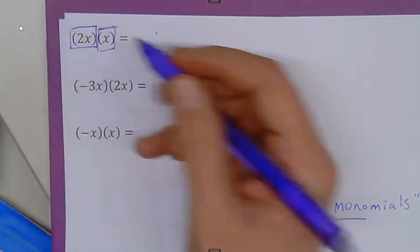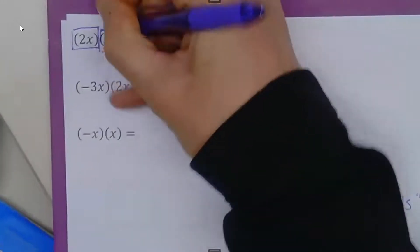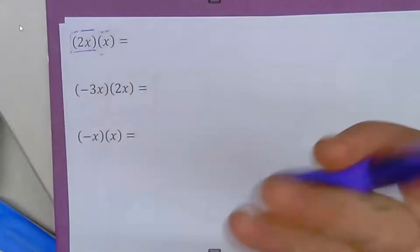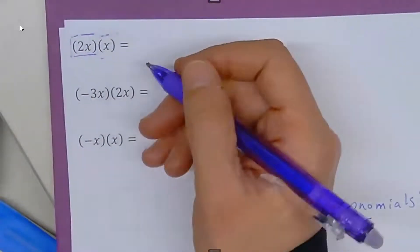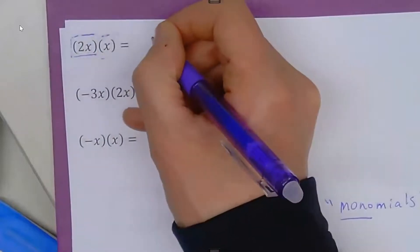2x and x are both monomials. Now, when we multiply monomials, we can write them in an expanded form.